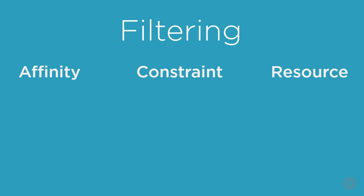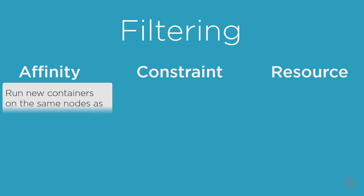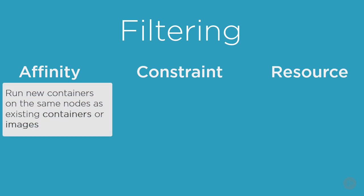At a really high level, affinity filters say things like: start this container on whichever node is running ABC container or XYZ container. And the same for images — run this new container on whichever node already has a particular image pulled locally. So it's really just a way of saying run a new container next to a particular other container or image.